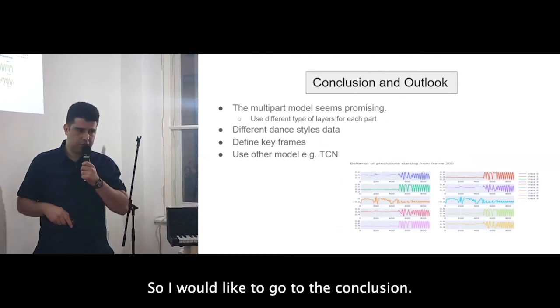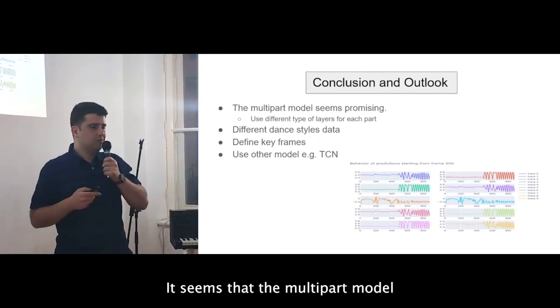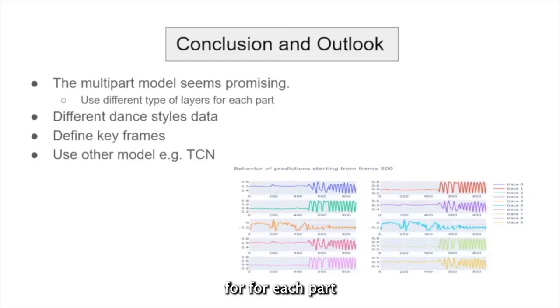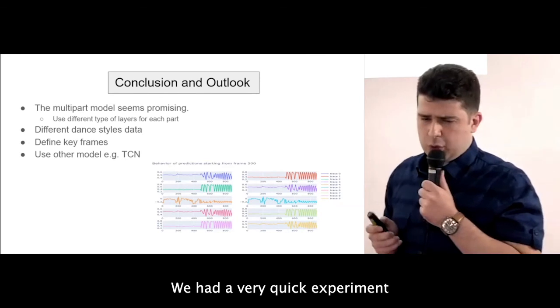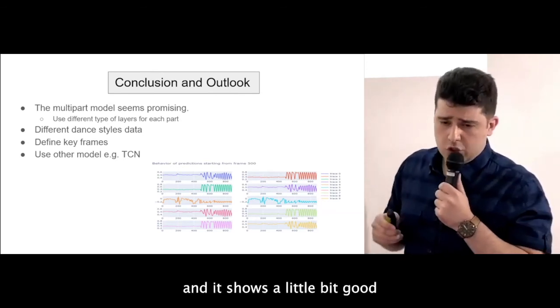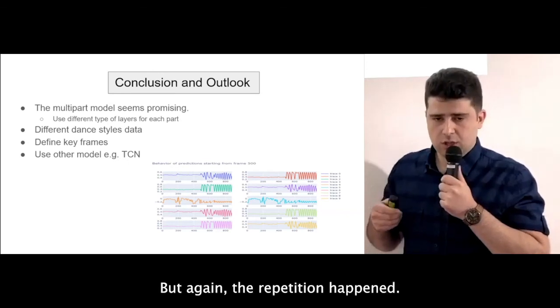So I would like to go to the conclusion. It seems that the multi-part model that we called it are promising. Maybe as a future, somebody can use different layers and models for each part and then do the parallel. Or we can use more, let's say, dance styles as an input. Then the dynamic, probably dynamic, the first one changes. Maybe we can define a key frame. What does it mean? We say that, okay, start dance from this position, from whatever its history, and give me the dance that has a destination position. This is another idea. The other idea used other models. We had a very quick experiment on the TCN, which somehow have LSTM and convolutional neural networks. And it shows a little bit good at the first frames that we had also. But again, the repetition happened.